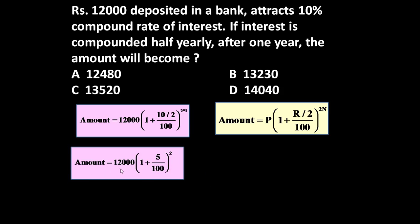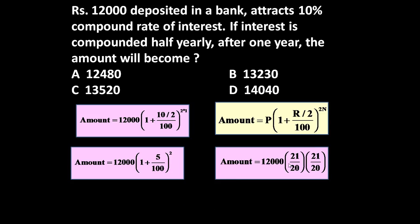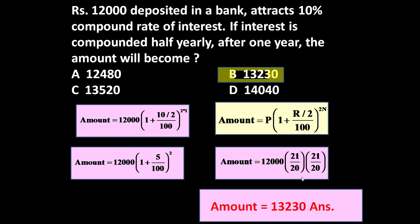Let us simplify it. Amount is equal to 12,000 into 1 plus 5 upon 100 power 2. Amount is equal to 12,000 into 21 upon 20 into 21 upon 20. Let us simplify it. Amount becomes 13,230 rupees.